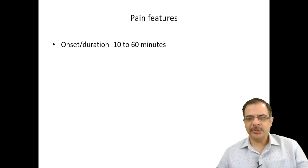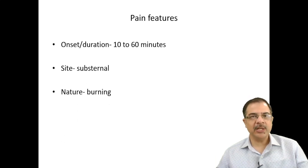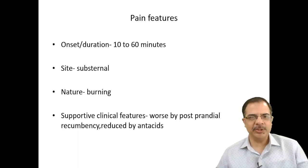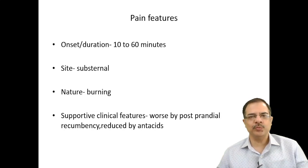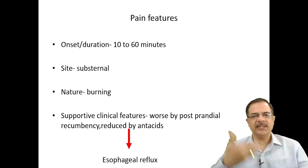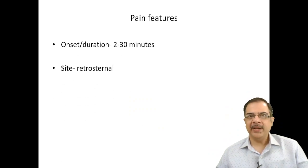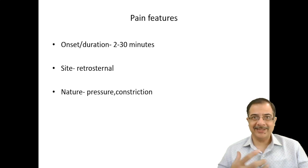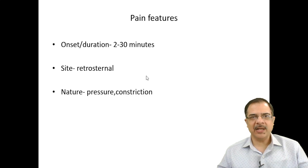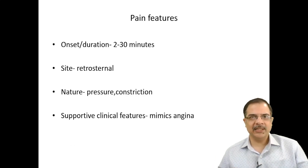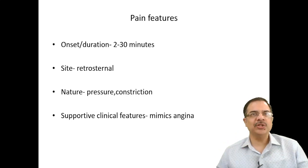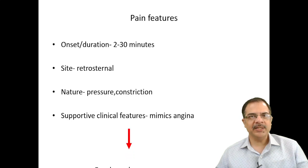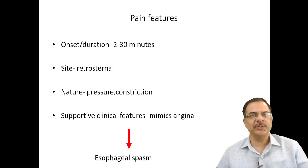If the pain lasts 10 to 60 minutes, is substernal, and described as burning, think of gastrointestinal lesions. It is worse postprandially and relieved by antacids — obviously a case of reflux. Pain duration up to 30 minutes, retrosternal, described as pressure or constriction, mimicking angina, but relieved by nitrates or calcium channel blockers — this is esophageal spasm, a very important differential diagnosis from angina.